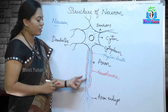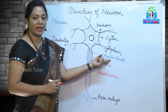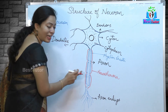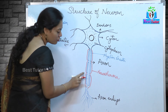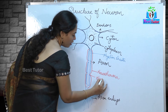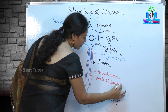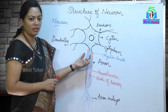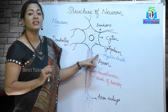The entire length of the axon is protected by a sheath known as myelin sheath. This myelin sheath leaves certain gaps throughout the length of the axon. These gaps are known as nodes of Ranvier. The axon is protected by myelin sheath, which acts as an insulating material.